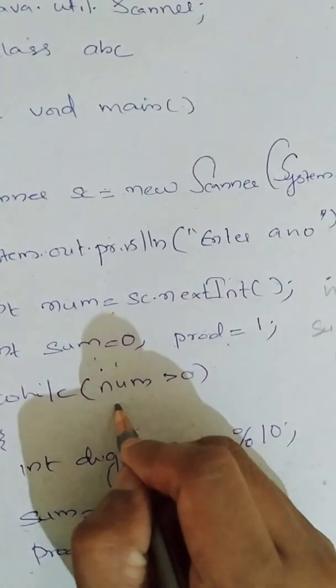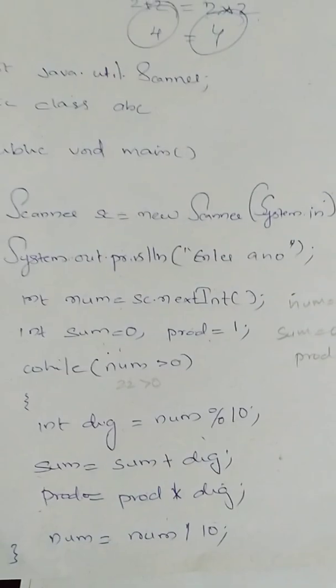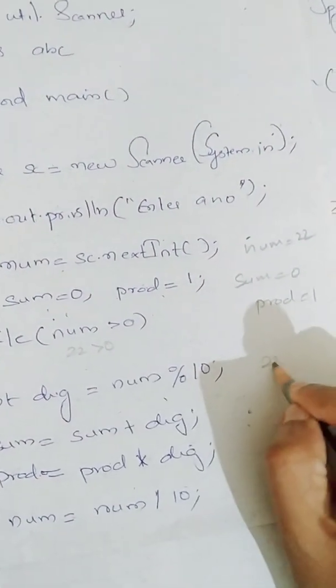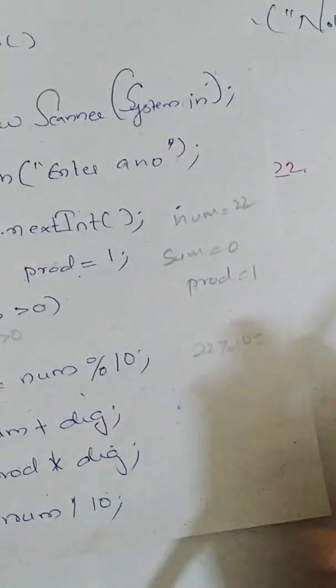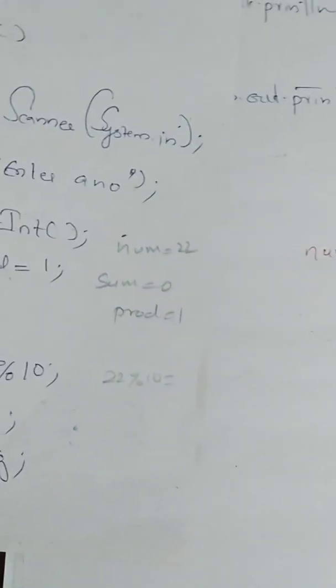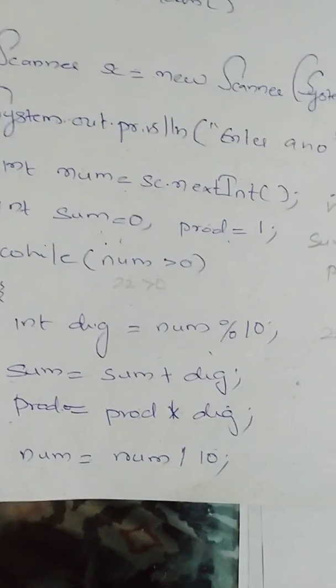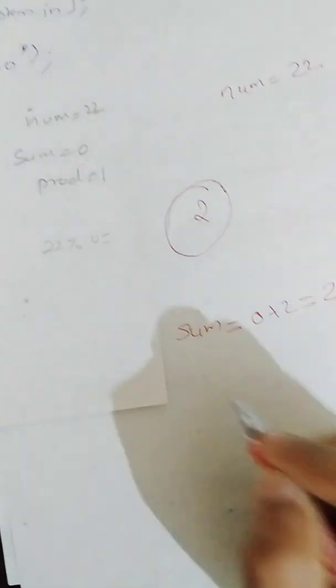When it comes to here, 22 greater than 0, true. Your condition is true. So it comes inside. So 22 modulus 10, it will give the last digit as 2. Sum is equal to sum plus digit means sum is equal to 0 plus 2 which is equal to 2.